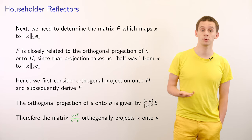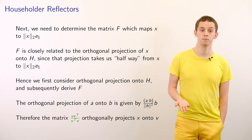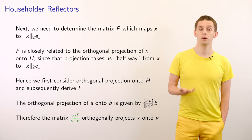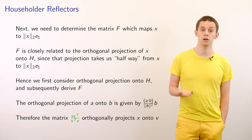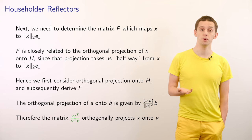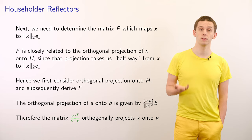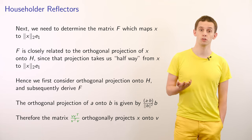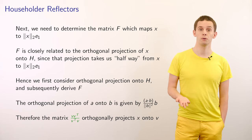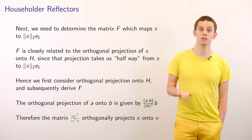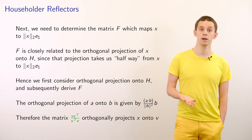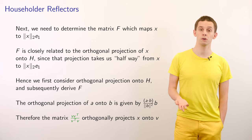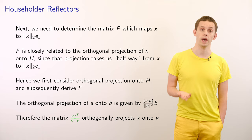Next we need to determine the matrix F that maps our vector x onto the Euclidean norm of x times e_1. F will be closely related to an orthogonal projection of x onto the subspace H, since that projection takes us halfway from x to the target. We'll first consider an orthogonal projection onto H and subsequently derive F. The orthogonal projection of a vector a onto b is given by (a·b / ‖b‖²) times b. Therefore the matrix V V^T divided by V^T V orthogonally projects x onto V.